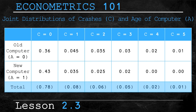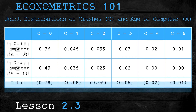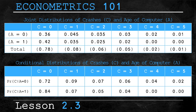As you can see, new computers have a higher probability of zero crashes and lower probabilities of crashing than older computers — exactly what you'd expect. Since the table shows all possible outcomes, the joint probabilities sum to one. Taking this table of joint distributions, let's create a table showing the probability that a computer will crash conditional on its age. The formula remains the same: joint distribution over marginal distribution. Since the marginal distribution for both A equals zero and A equals one is 0.5, we divide each joint probability value by 0.5.